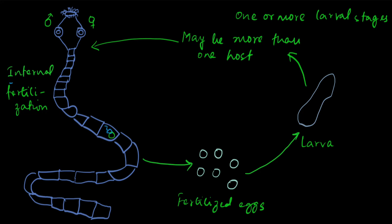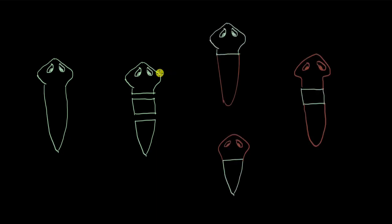Some flatworms like planaria undergo regeneration. So if accidentally its body breaks into different parts, each of the body parts can regenerate into a full new individual. Like this. So the head forms, the head part forms over here. The middle part regenerates to form this individual, and the tail part regenerates to this. So it broke into three parts, and then each of the three parts grew up into a new individual, which is what happens in regeneration.